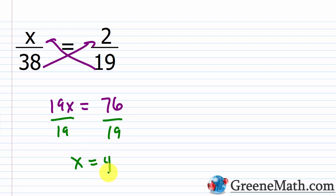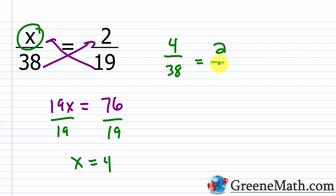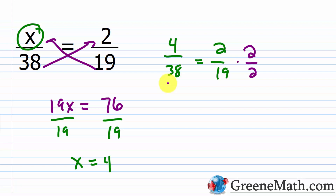You can check that easily — plug in 4 for x, and you'd have 4/38 = 2/19. Of course this is true: if I multiply 2 by 2 I get 4, and if I multiply 19 by 2 I get 38. So essentially I took 2/19 and multiplied it by 2/2, getting 4/38. So x = 4.